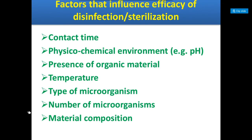There are some factors which influence the efficacy of disinfection or sterilization. If all factors are normal and present, the sterilization process can occur, but there are some factors that can affect the killing of microorganisms. For example: contact time — if proper contact time is given to kill the microorganisms, then they can be killed. Also physicochemical environment such as pH, presence of organic material, temperature, type of microorganisms, number of microorganisms, and material composition — these are the factors which can affect the efficacy of the disinfection or sterilization process.